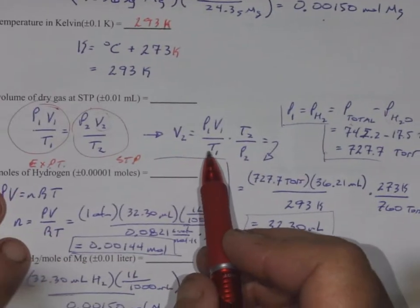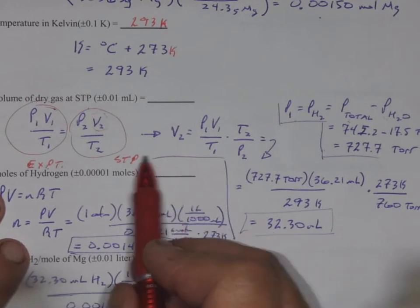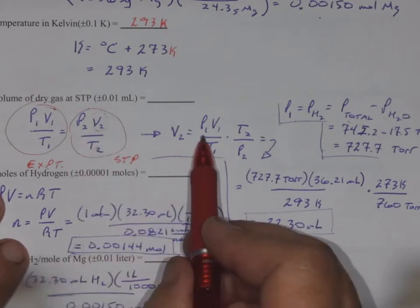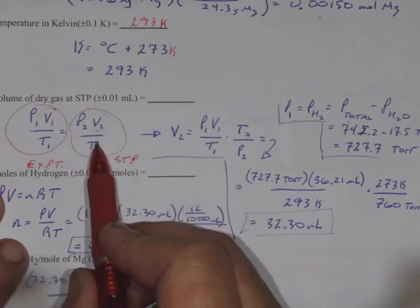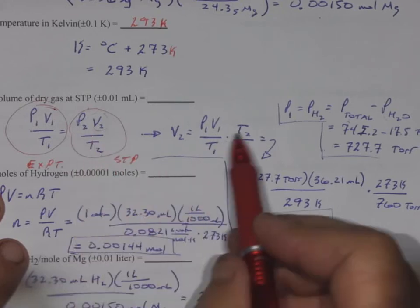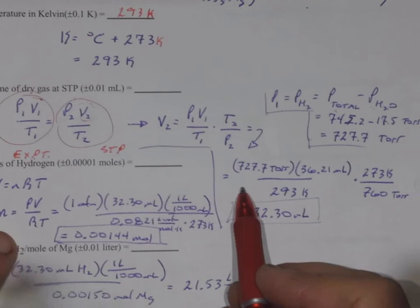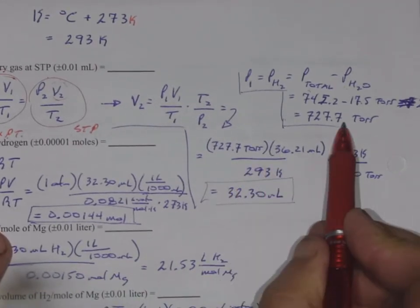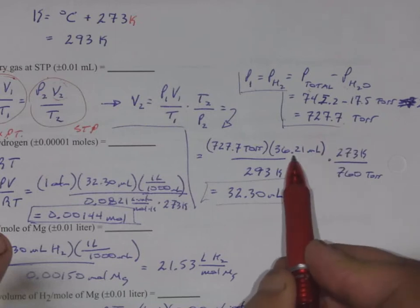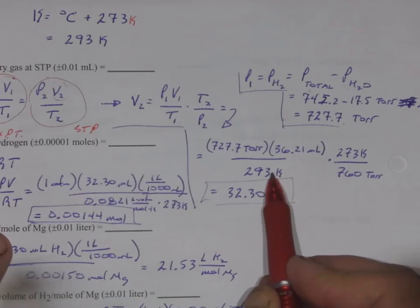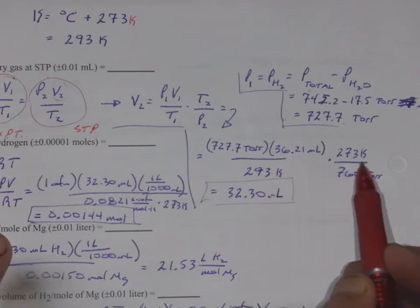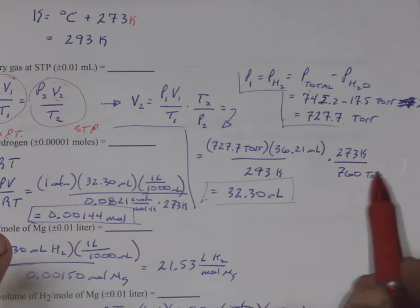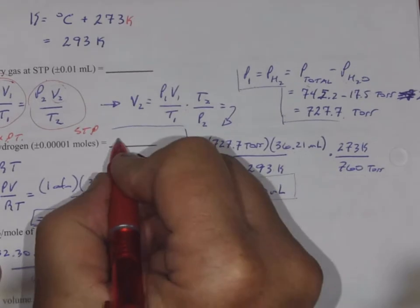Going back to the combined gas law, we solved for V2, just rearranging these pieces. So, I have my P1 V1 over T1 times the P2 T2 inverted. And then I just plug in the numbers. So, I have my 727.7 torr, which is my pressure of hydrogen. I have my collected volume of 36.21 mLs. My room temperature, experimental temperature of 293 Kelvin. And then I'm correcting by the STP 273 Kelvin and 760 torr, or 1 atmosphere. And I come up with 32.30 mLs.